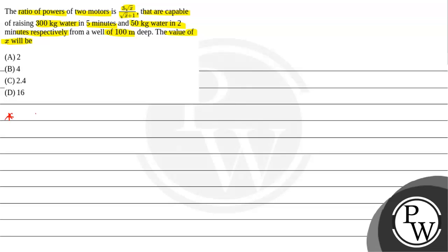Let's see the key concept we will use to solve this question. The first concept is average power, which is given by total work done divided by total time.